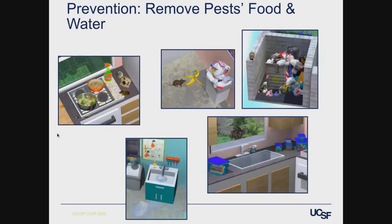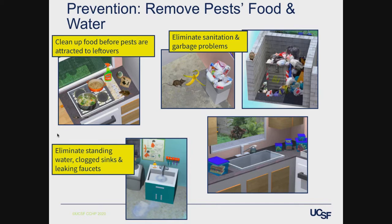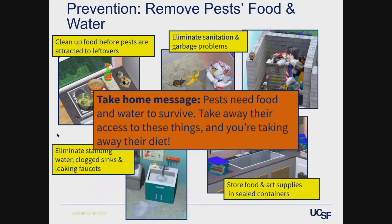The next aspect of prevention is to remove pests' food and water. Clean up food before pests are attracted to leftovers, eliminate sanitation and garbage problems, eliminate standing water, clogged sinks, and leaking faucets, and store food and art supplies in sealed containers. The take-home message is that pests need food and water to survive — take away their access to these things and you take away their diet.